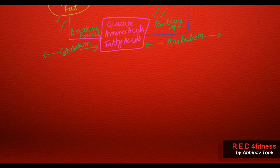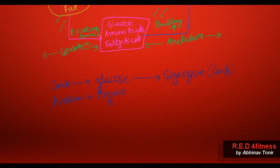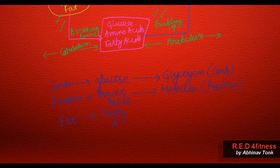Let me summarize once again. You are eating carbs, which are broken down into glucose, which are then built up as glycogen. Protein is broken down into amino acids and then built up as muscles — skeletal muscles. Fats are broken down into fatty acids and then built up as body fat.